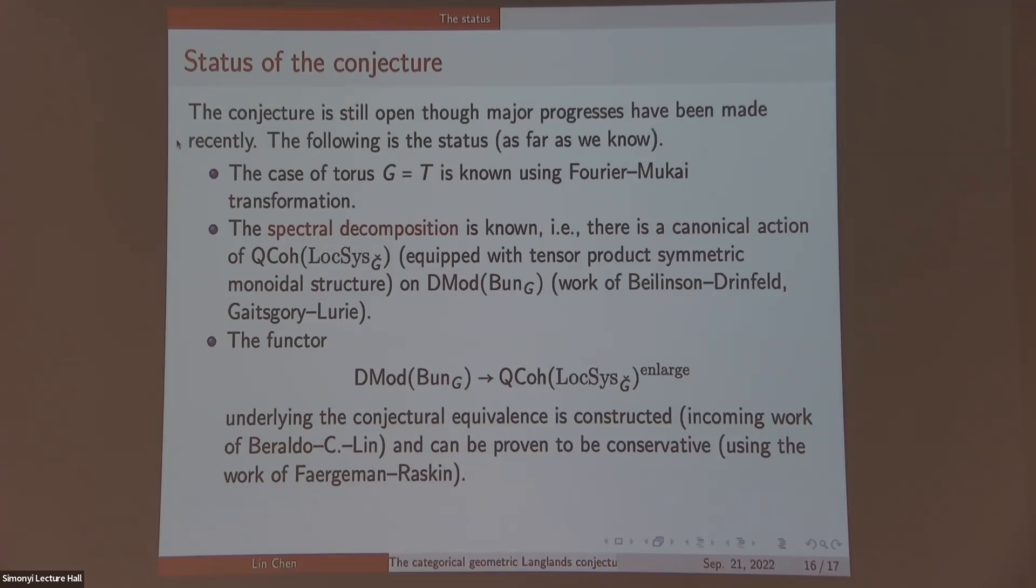Now we have the functor from D-mod Bun_G towards this enlarged category of Qcoh Loc_SG-check. This should be the conjectured equivalence. This will come in the coming work of Dario Beraldo, Lin Chen, and me.